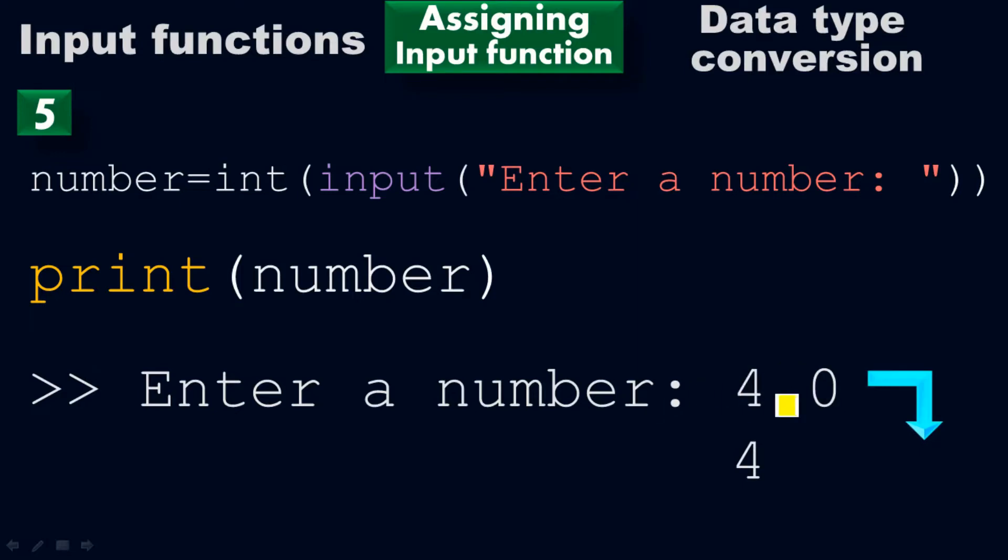Now we need to convert the float number into integer. To do so, we need to use the int function. The int function is for converting to integer.